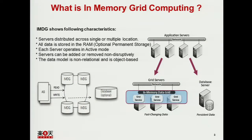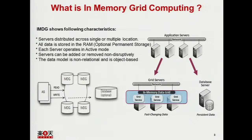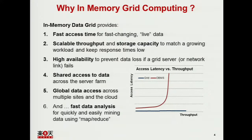There's the application servers, the grid server, and the database server. As you can see from the picture, the database server is optional — the age is coming where you don't need a very expensive database server or even expensive storage. That's the main benefit of in-memory data grid computing. Why in-memory data grid? The data is in memory, so you have very fast access to live data, and it's a grid — so it's very scalable. It's also high availability, and you can access the data throughout any of your data centers around the whole world. The latency and throughput graph shows that in-memory data grid delivers very good throughput.